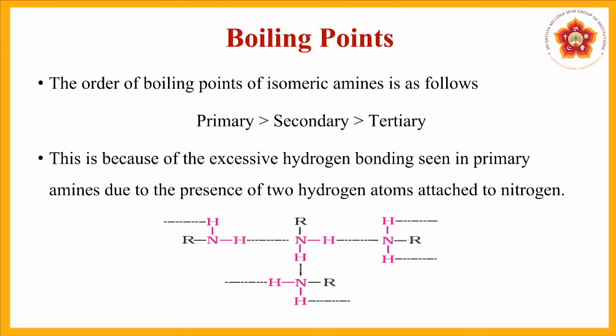The order of boiling points of isomeric amines (same molecular mass) is primary > secondary > tertiary, because of the excessive hydrogen bonding seen in primary amines. More hydrogen bonding means more energy is needed to break it along with van der Waals forces.